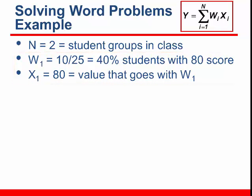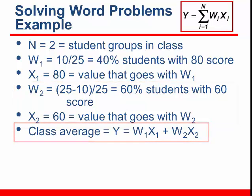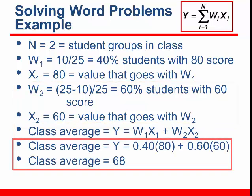Weight 2 is the rest of the class, 60 percent, or 15 over 25. And X sub 2 is 60, the value that goes with weight 2. Applying the weighted average formula, the class average is 68.